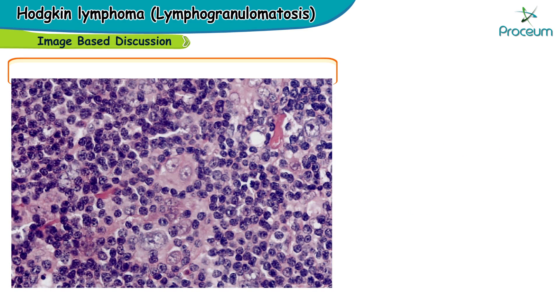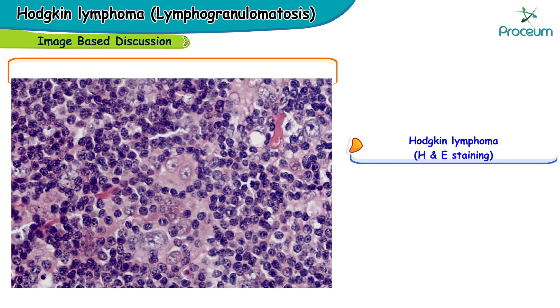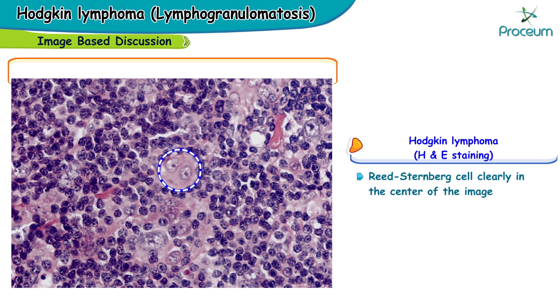Here's another image with HNE staining. You can see that the Reed-Sternberg cell is clearly seen in the center of this image with two large nuclei which look like owl's eyes.